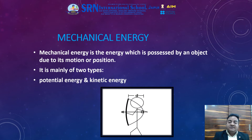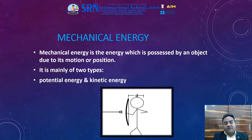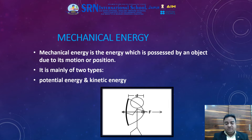Now let us study about what is mechanical energy. Mechanical energy is the energy which is possessed by an object due to its motion or position. So it is mainly of two types: potential energy and kinetic energy. You can see in the picture that an archer is having an arrow in his hand and moving the string of the bow, and because of this, the stored energy is potential energy. Because of the stretched energy of the string, the arrow moves in the forward direction.